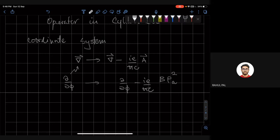...gets replaced by ∂/∂φ minus iE/ℏc times Bρ²/2. That's the A outside. [Student: Where does the i come from?] Oh, because p has i in it.